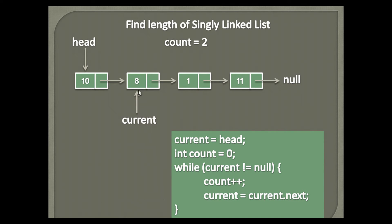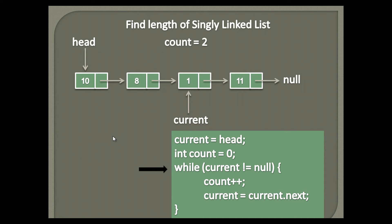The current node now traverses to current's next node, that is the third node. Now it checks the while loop condition again. The current node points to the third node, which is not null. Therefore it again executes the statements in the while loop. Count gets incremented by one and becomes three, because current is not null, and signifies the list has three nodes. The current node now traverses to current's next node, that is the fourth node.